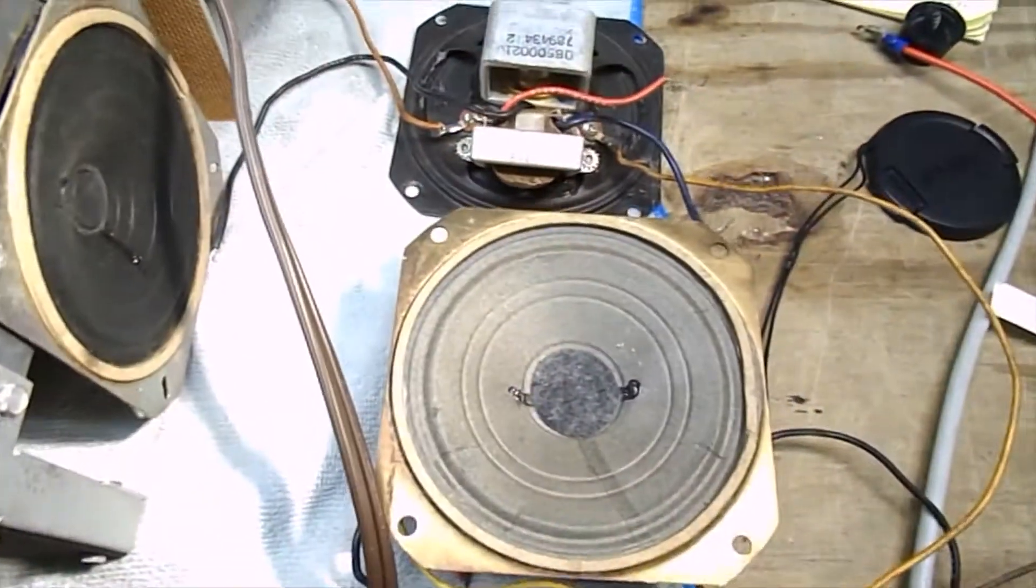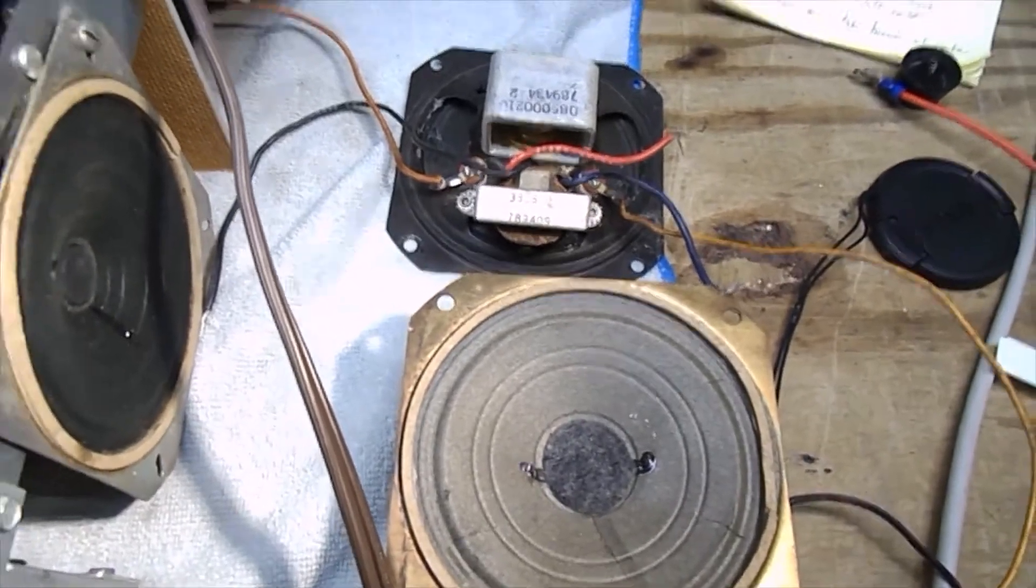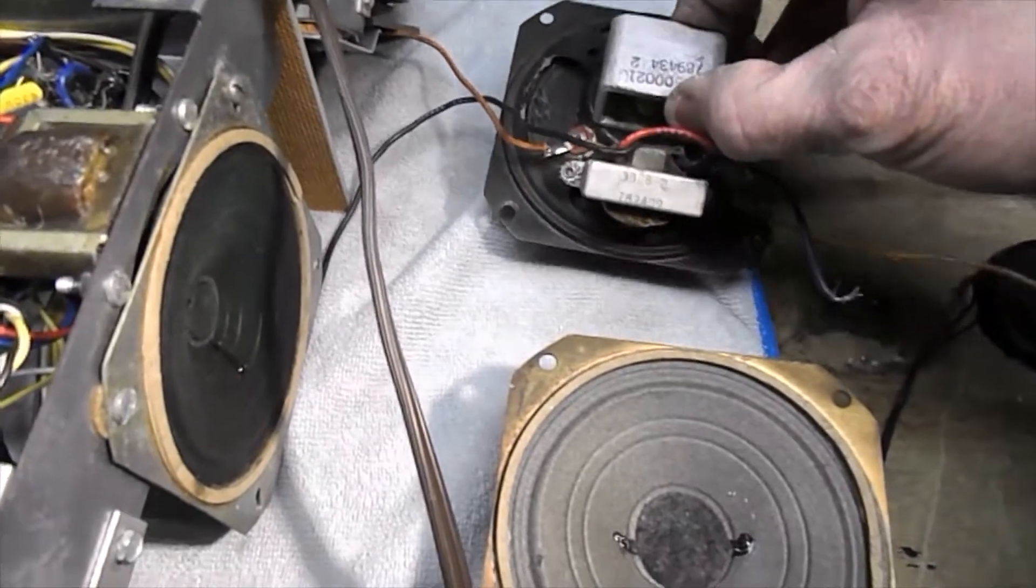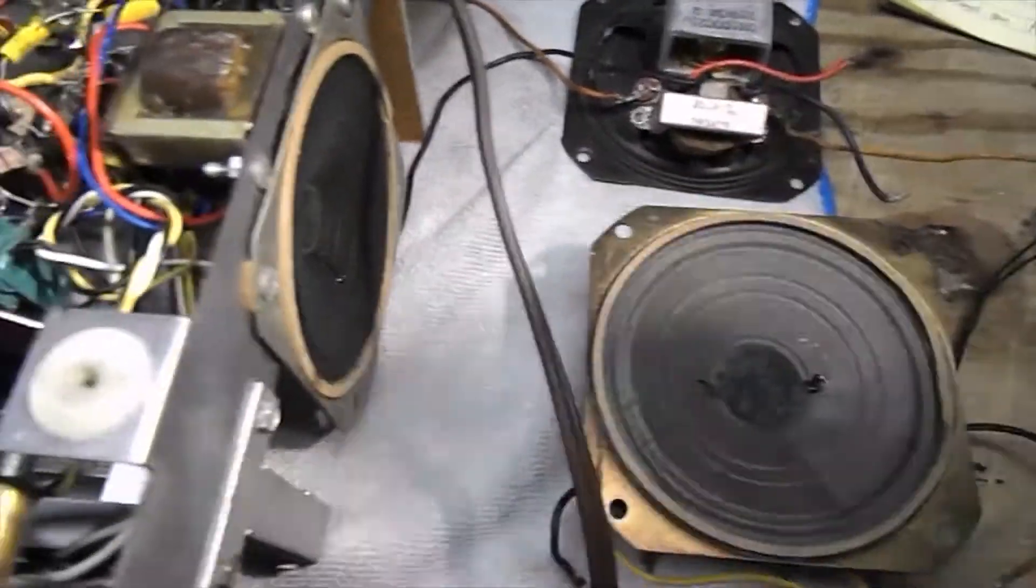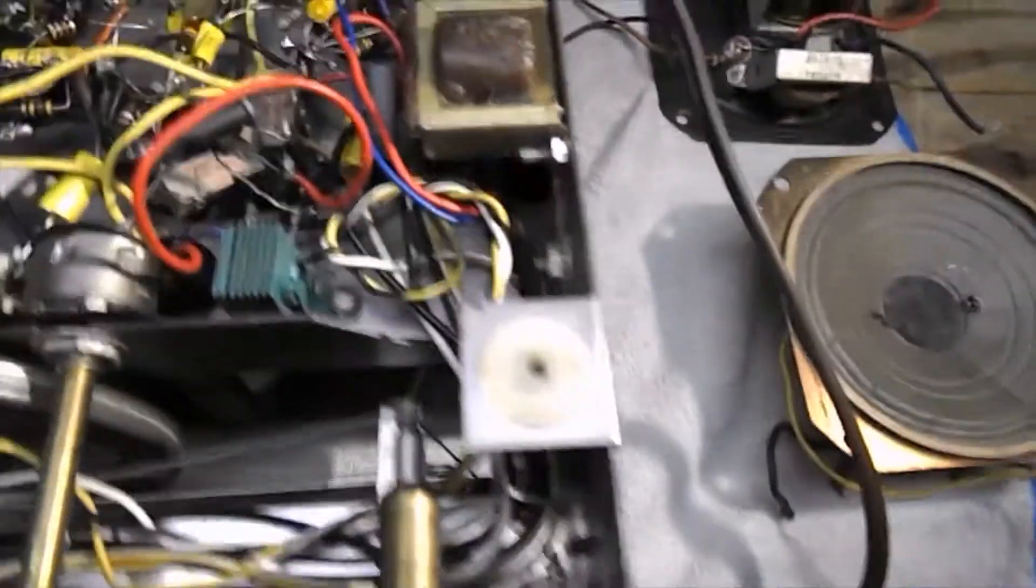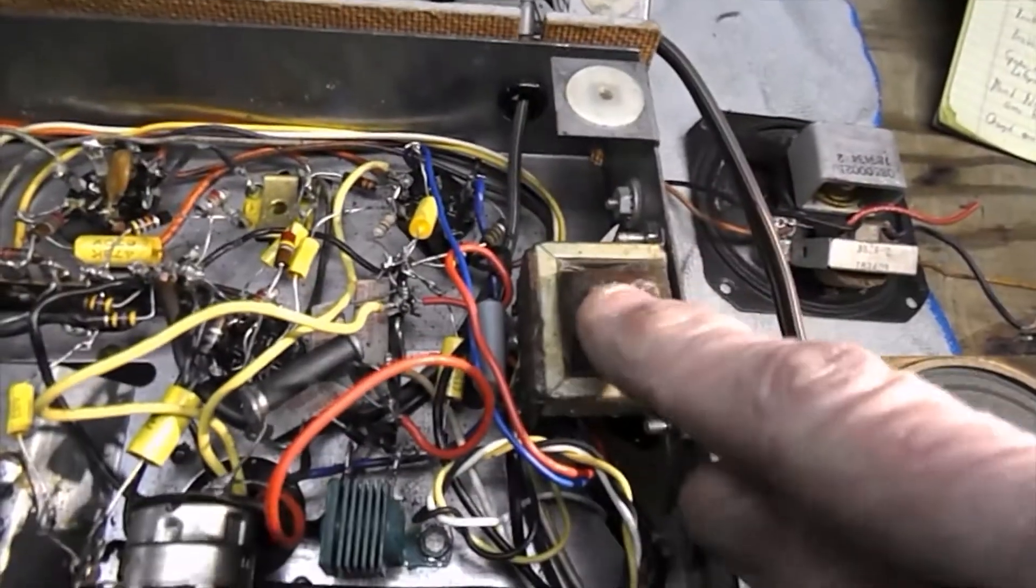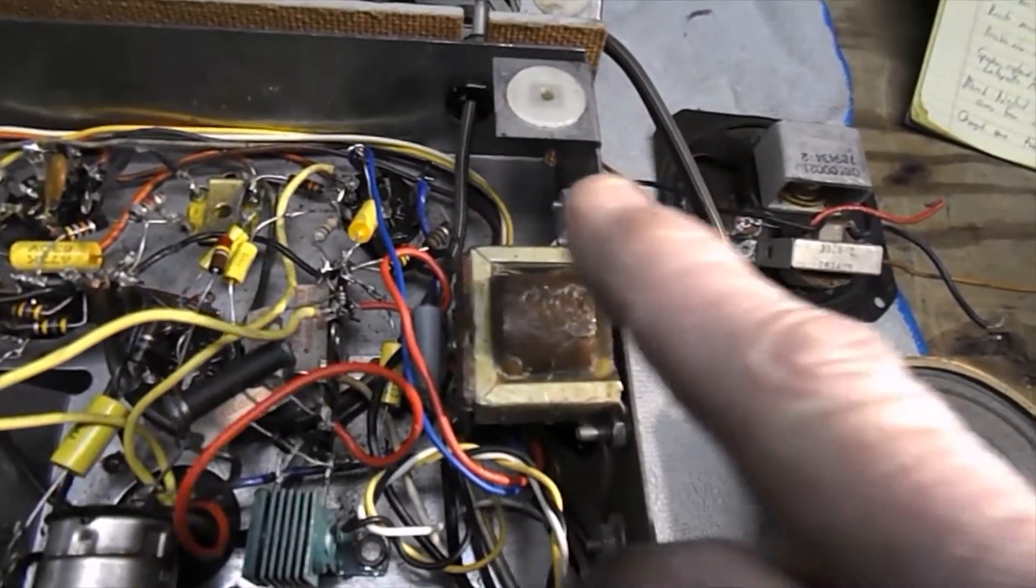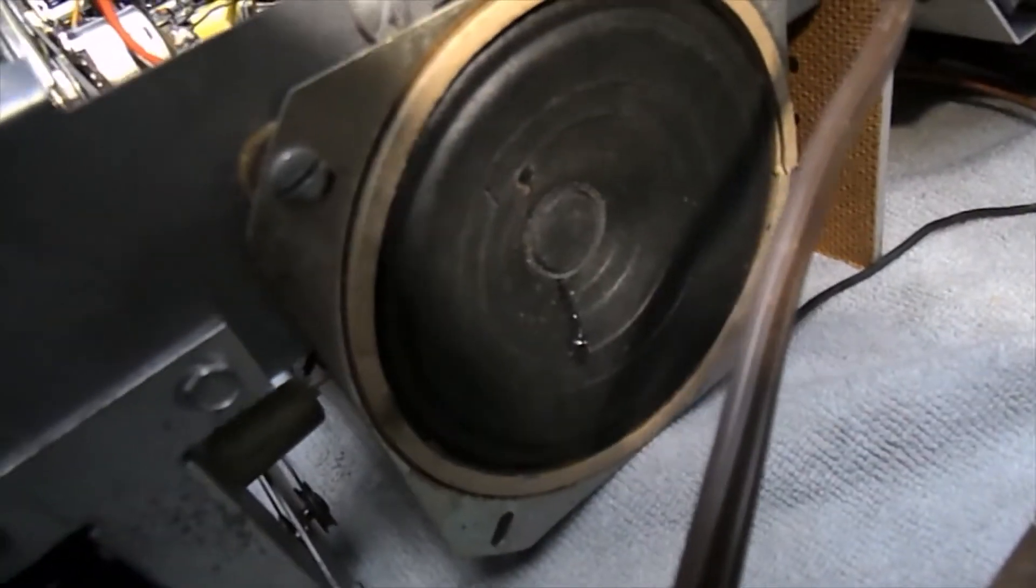One of the things I did was replace the speaker with one from the Lafayette HE40 the other parts radio I have. This is what the speaker looks like that came out of the S120s. The Lafayette did not have the audio transformer attached to the speaker. It was in there separately so I mounted it here and I put the speaker there from the Lafayette. It looks and sounds a lot better.